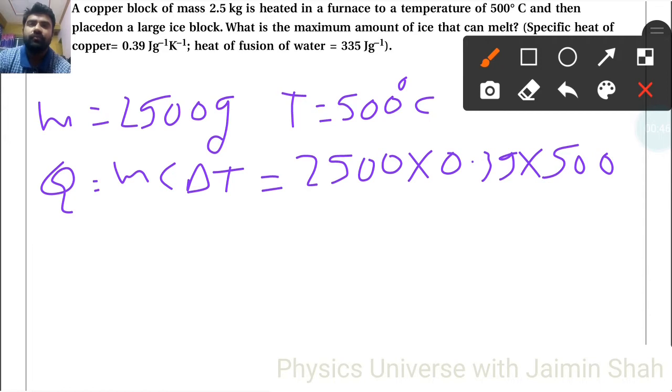So here, 2500 into 0.39 into 500, that will be equal to 487,500. So that is our Q in joules.